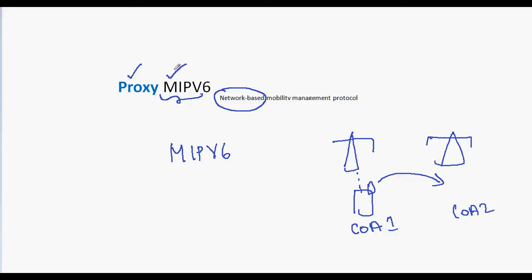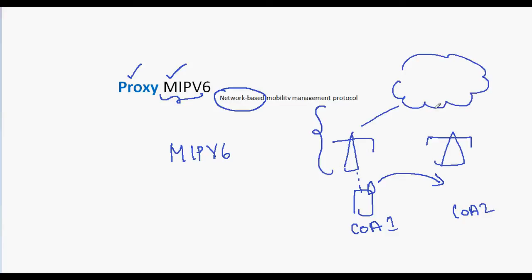Proxy Mobile IPv6 uses Mobile IPv6, so there is a concept of care-of address. But it is a network based mobility management protocol, meaning the IP mobility solution is implemented in the network and the mobile node is not involved — it is not aware of what's going on.